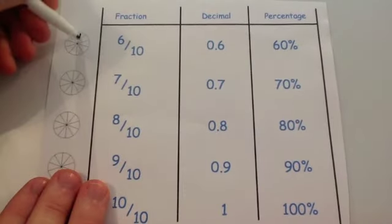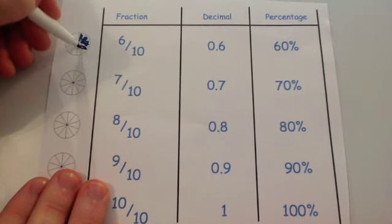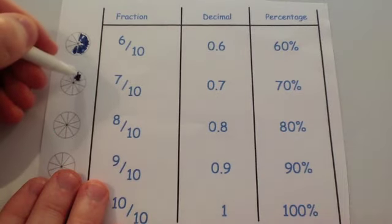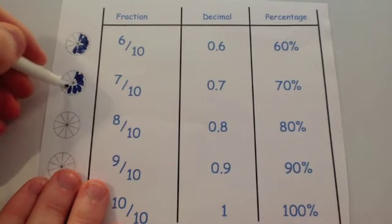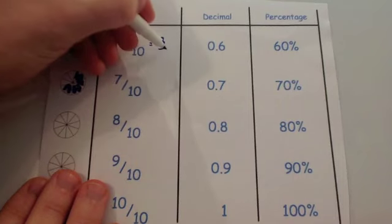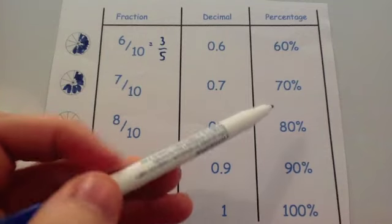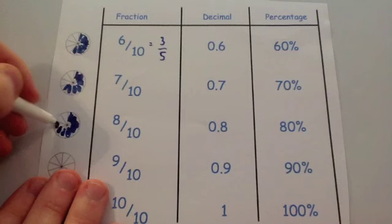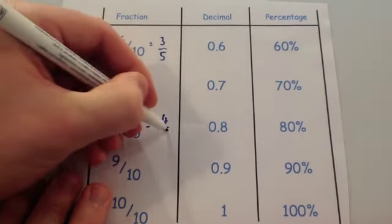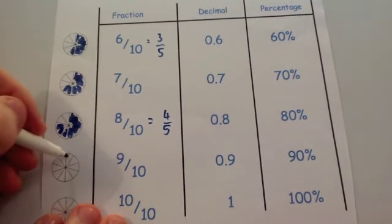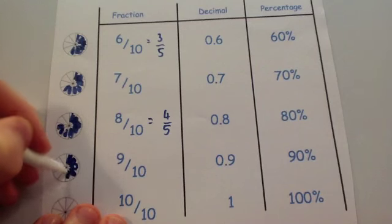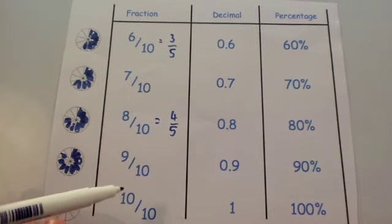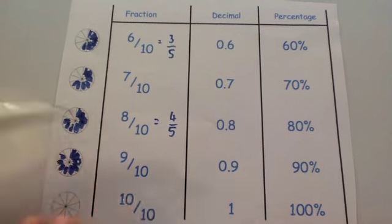Six tenths is six sections: 60% or 0.6. Six tenths is also the same as three fifths, which is also 60%. Seven tenths is 70% or 0.7. Eight tenths is the same as four fifths — both are 80% or 0.8. Nine tenths is nine out of ten sections: 90% or 0.9. Ten tenths — numerator equals denominator — is one, or 100%; you're shading the whole thing.